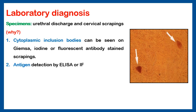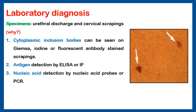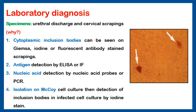The second way to detect Chlamydia is antigen detection by ELISA or immunofluorescence. The third way is nucleic acid detection by nucleic acid probes or PCR. If I want to isolate the organism, I should culture it intracellularly on McCoy cell culture, then detect the organism inside cells by the previous stains — Giemsa, iodine, or fluorescent antibody stain.